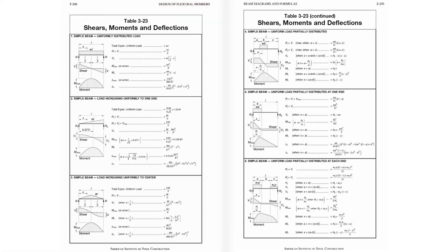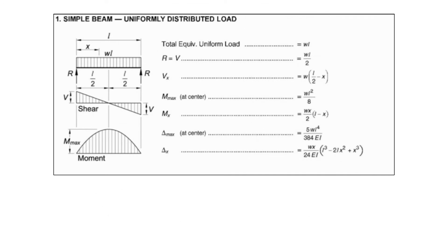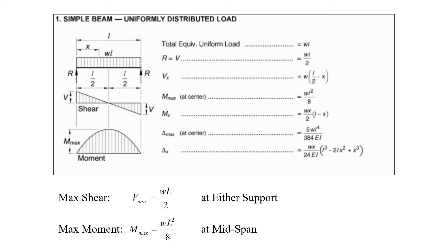As an alternative to drawing shear force and bending moment diagrams, we also have other options for performing our beam analysis. On this slide, I'm showing a couple of pages from the AISC Manual of Steel Construction that include beam tables where shear forces, bending moments, and deflections are provided for many commonly encountered beam configurations and loadings. Case 1 applies to a simply supported beam subjected to a uniformly distributed load, where the maximum shear force is WL over 2 and the maximum bending moment is WL squared over 8.